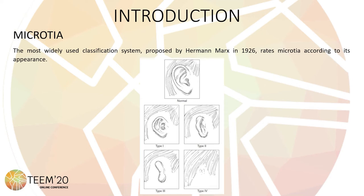I will start by explaining what microtia is. Microtia is a congenital ear deformity with partial or total loss of the auricle. Microtia can be caused by an error during embryonic cartilage development during the fifth or sixth week of gestation, or by abnormal physical force during development.